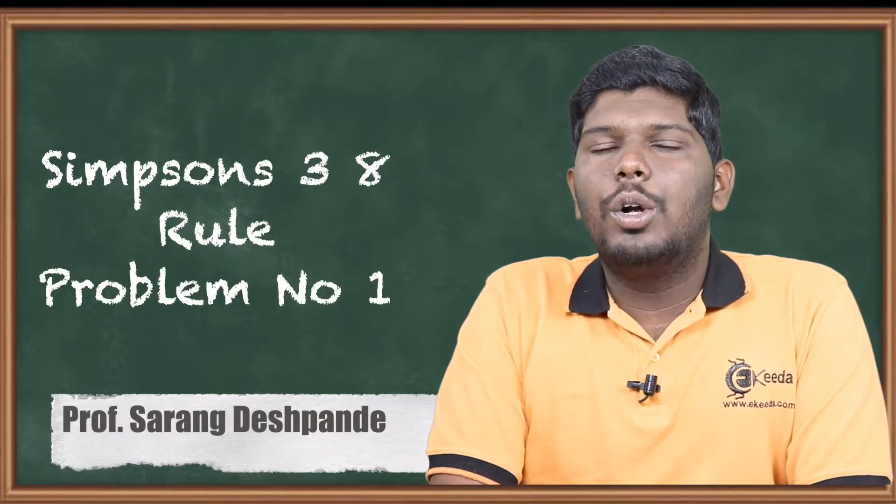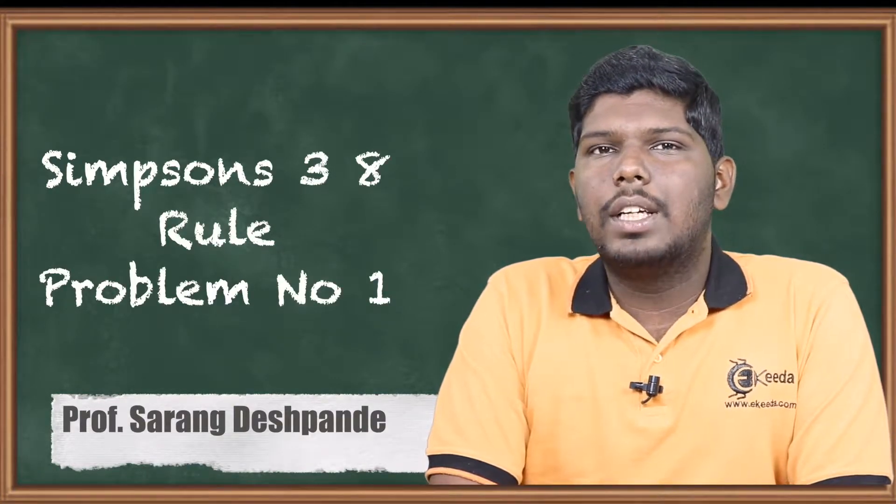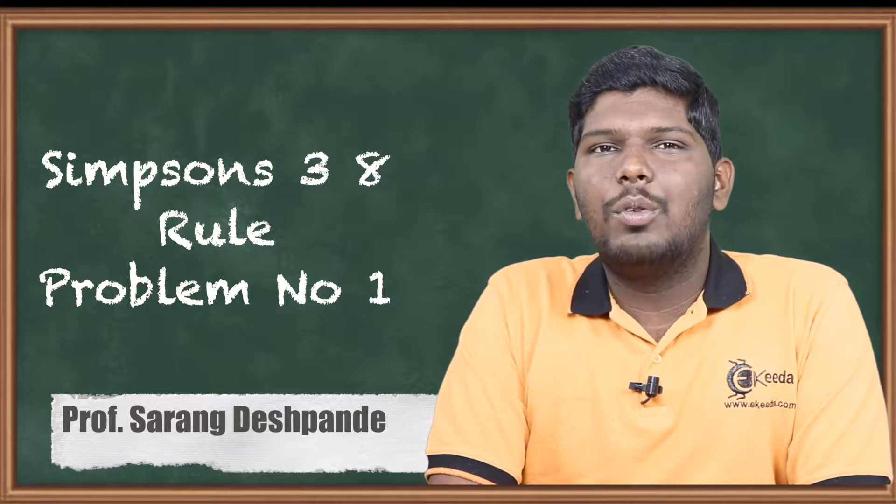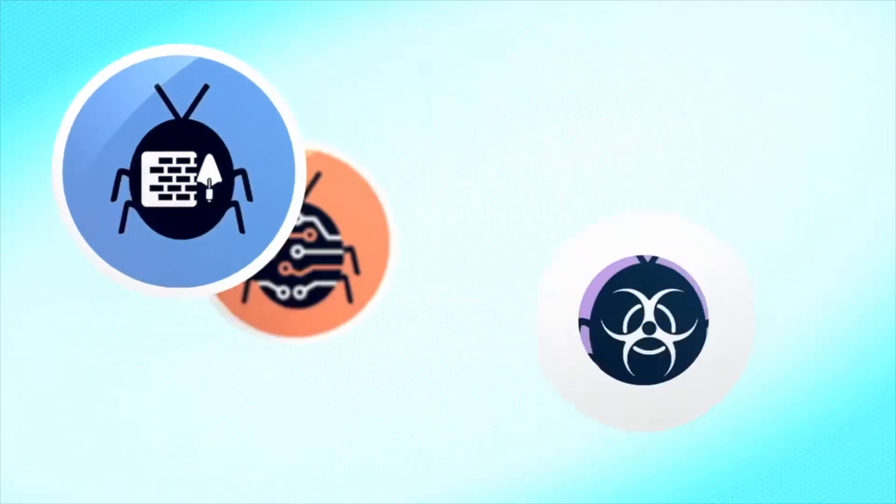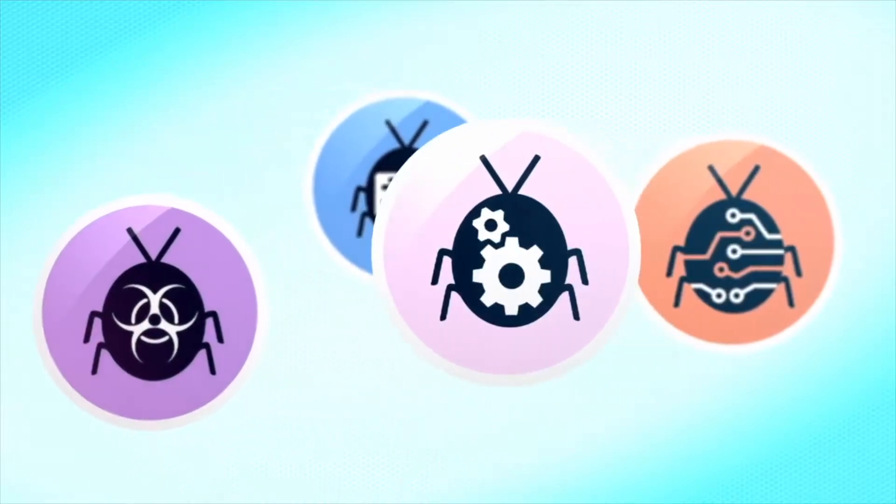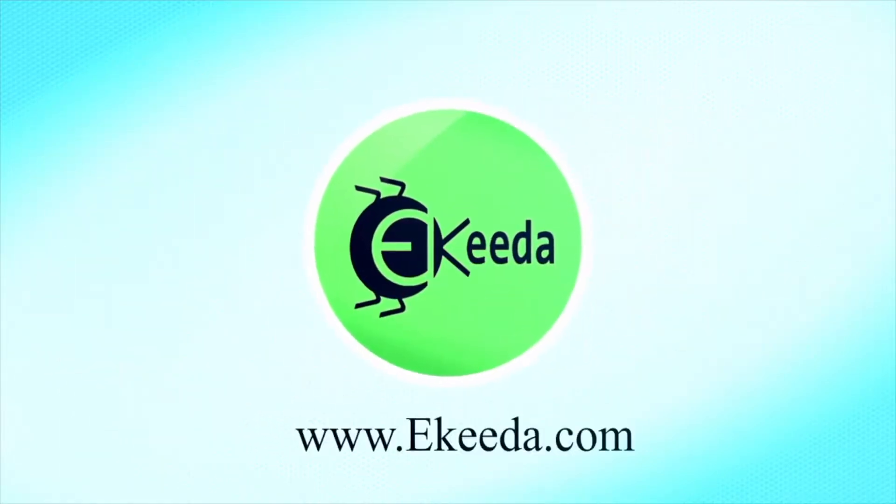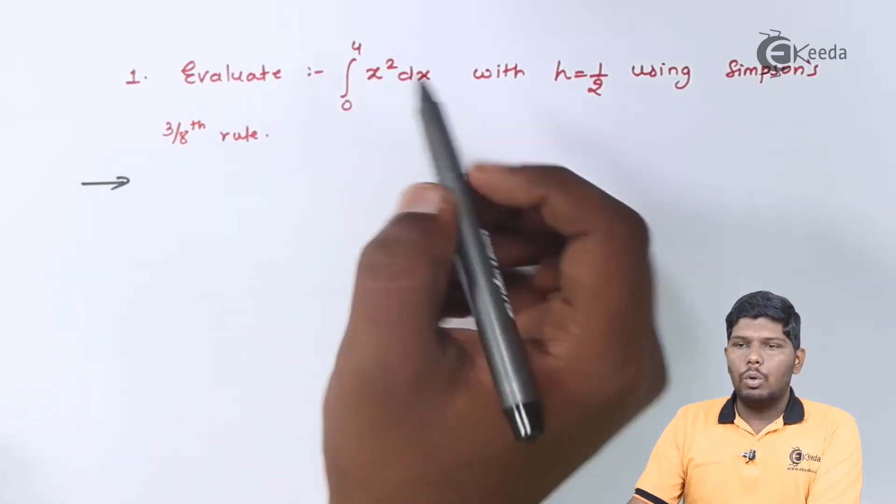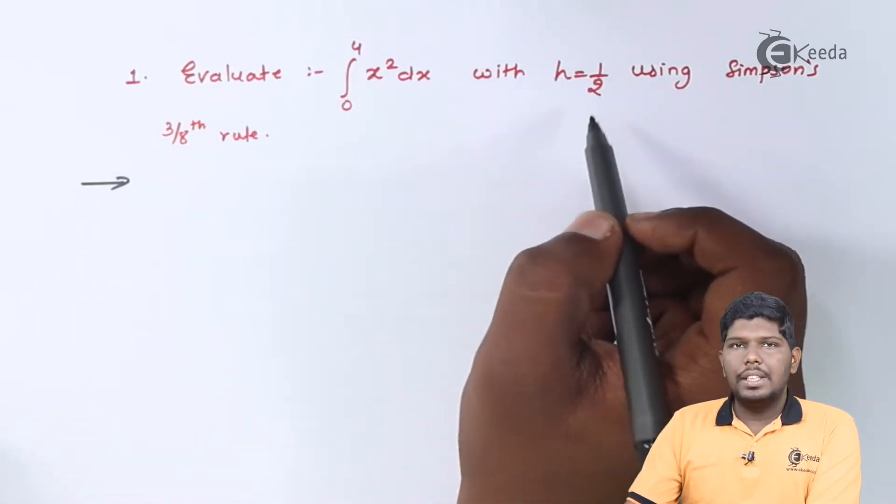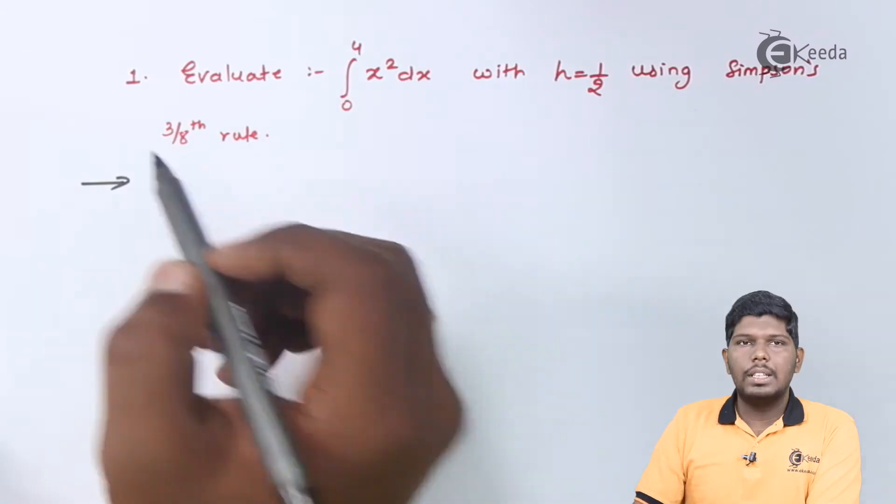Hello friends, in this video we are going to see a problem based on Simpson's 3 by 8 rule. Let us start with problem number 1. Evaluate integral 0 to 4 x squared dx with h equals 1 by 2 using Simpson's 3 by 8 rule.